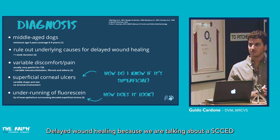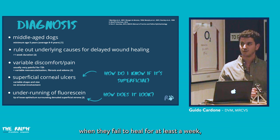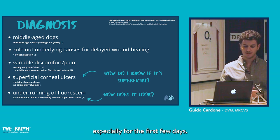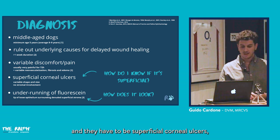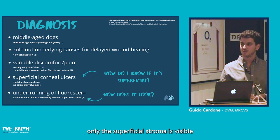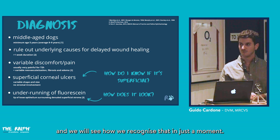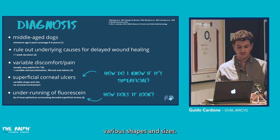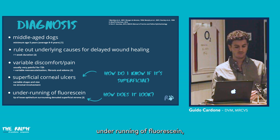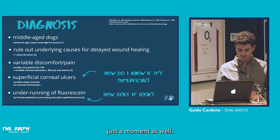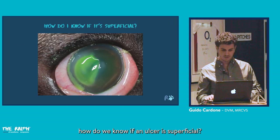We diagnose SCEDs in middle-aged or older dogs, average age 8 to 9 years. We are talking about a SCED when an ulcer fails to heal for at least one to two weeks on medical treatment. They are usually painful especially in the first few days, though discomfort can be variable. They must be superficial corneal ulcers with no stromal involvement, presenting in various shapes and sizes with fluorescein under-running at the edges.